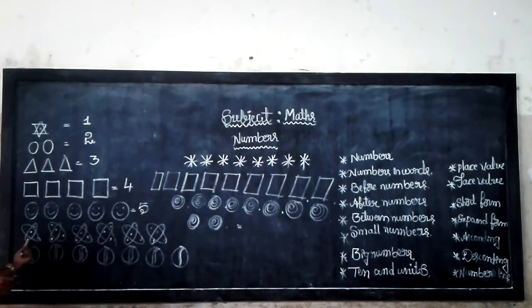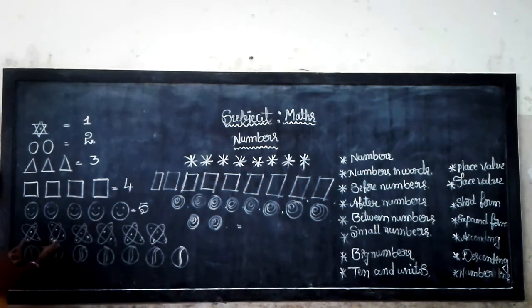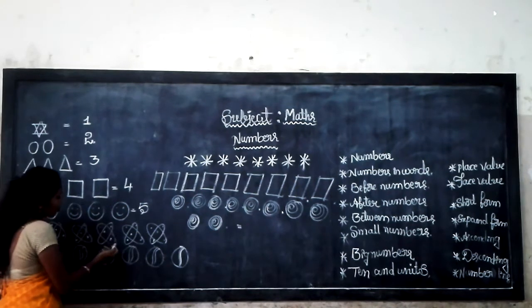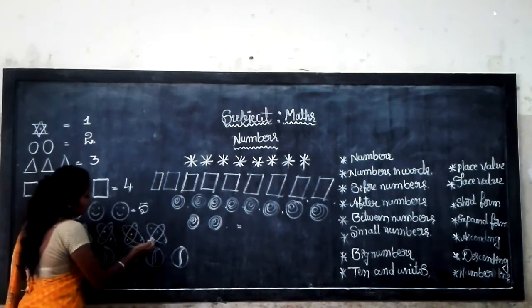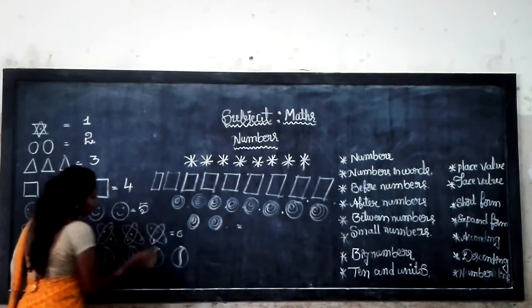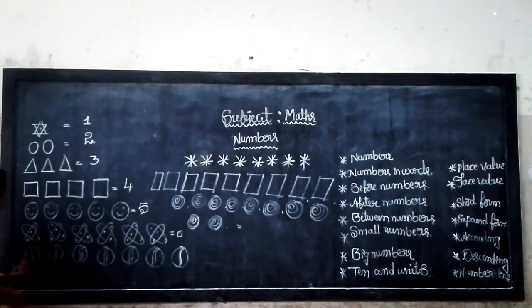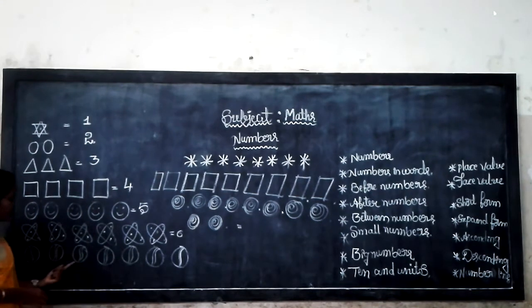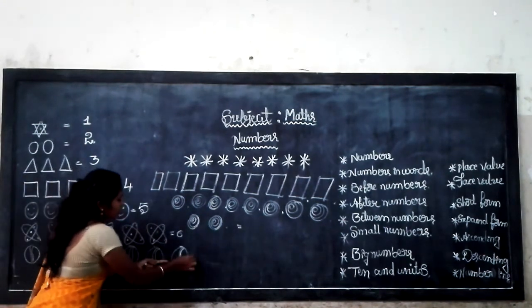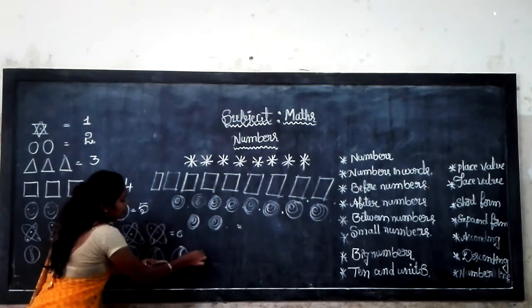Then, count the next one: 1, 2, 3, 4, 5, 6. Next one: 1, 2, 3, 4, 5, 6, 7.